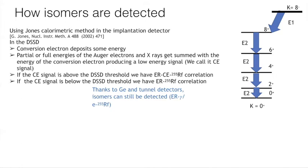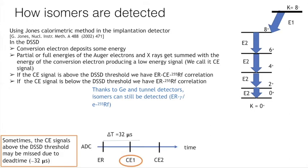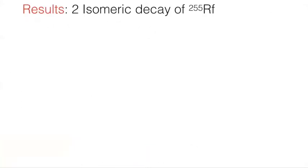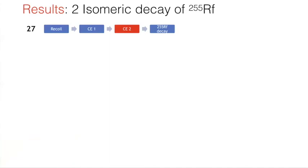If the C signal is below the DSSD threshold, we have just the evaporation residue and the Rf-255 ground state decay correlation. Thanks to our germanium and tunnel detectors, the isomers can still be detected — we call these the evaporation residue–gamma/electron–Rf-255 correlations. Sometimes, because of the dead time, the C signal of the first isomer can be lost even if it is above threshold — for example if the lifetime is shorter than 32 microseconds.